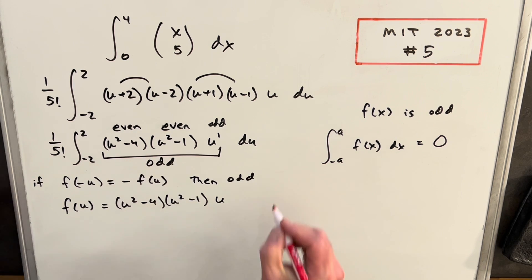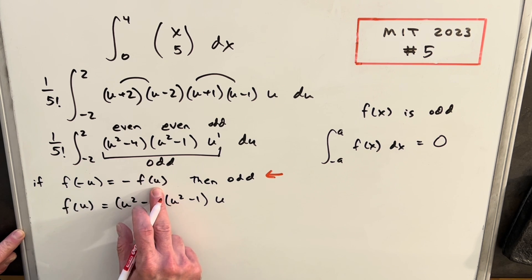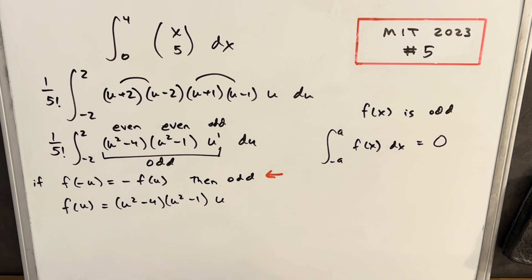So we have this definition of our odd function right here that we want to show. If we have a function and we input the negative, like if we input negative u and we get the negative of the whole function, then the function is odd. And I'm clearing my functions, this whole integral, so I'm saying my f of u is u squared minus 4, u squared minus 1 times u. So all I need to do is plug in a negative u into this and see what happens.